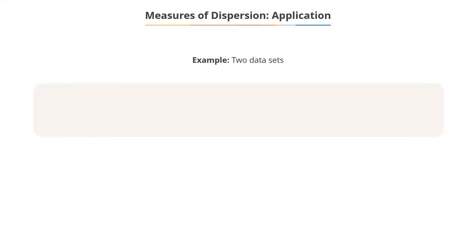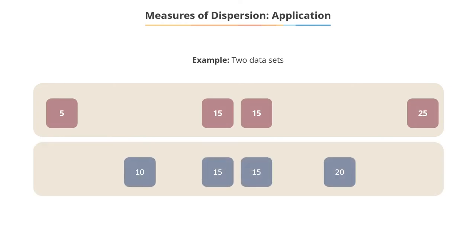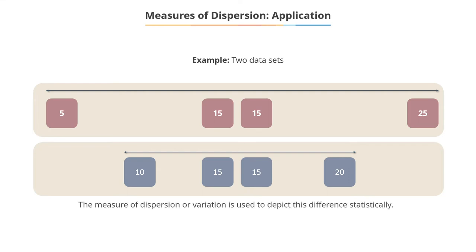But if you observe, you will see that the first data set is spread over a broader range. To depict this difference statistically we use a measure of dispersion or variation.